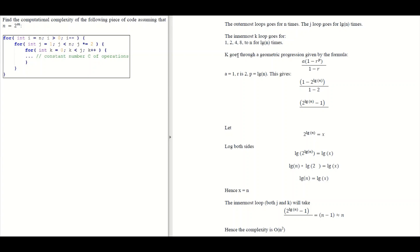Looking at the geometric progression 1, 2, 4, 8, ..., up to n: a is the first term, which is 1; r is the common ratio, which is 2. Substituting a = 1 and r = 2 gives us this expression. We don't yet know what p is.